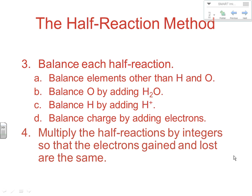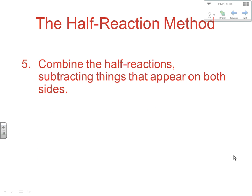Next, we're going to multiply the half-reactions so that the electron transfer is equal. Once we know how many electrons are being transferred, one reaction provides the electrons for the other, so there has to be a balance between the two reactions. Then we combine the half-reactions and subtract things that appear on both sides, and we'll be left with a balanced equation.